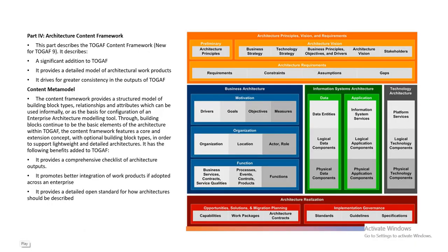The fifth part is the architecture context framework. This part of TOGAF's context framework has significant diagrammatic content. Architecture principles come from business strategy, technology, and business principles, along with architecture requirements, constraints, and assumptions and gaps. The business architecture model covers motivation, organization, and functions. It includes architecture realization, information systems, data, application, and technology architecture. The fourth is architecture content framework — the content meta model provides a comprehensive checklist and output, promotes better work products, provides details on open standards, and describes how architectures should be described.